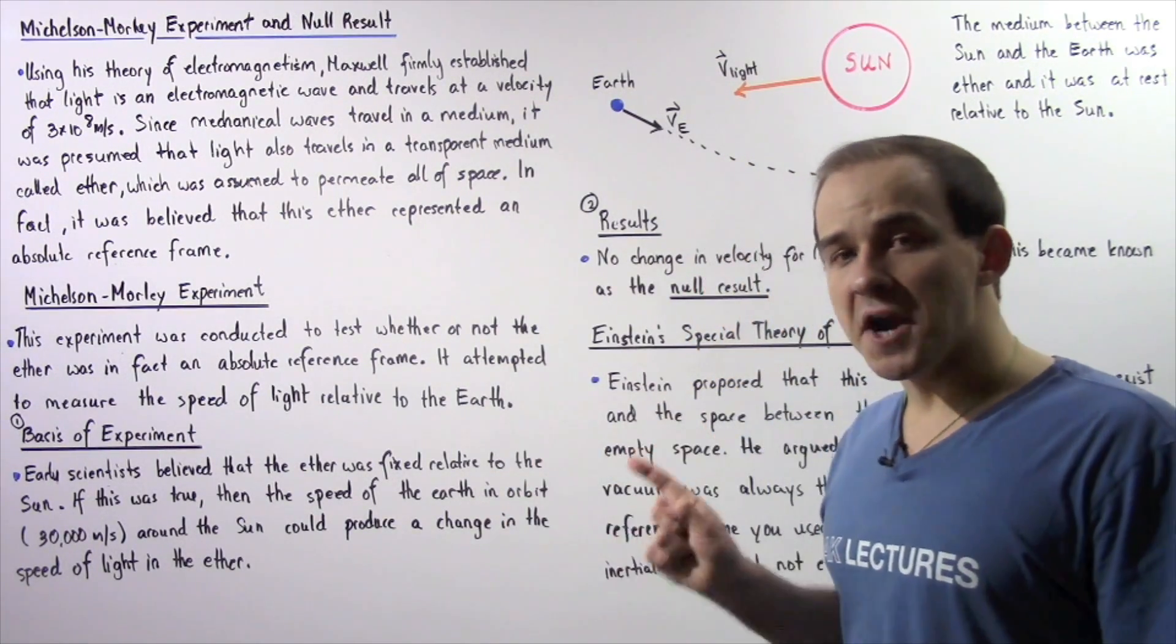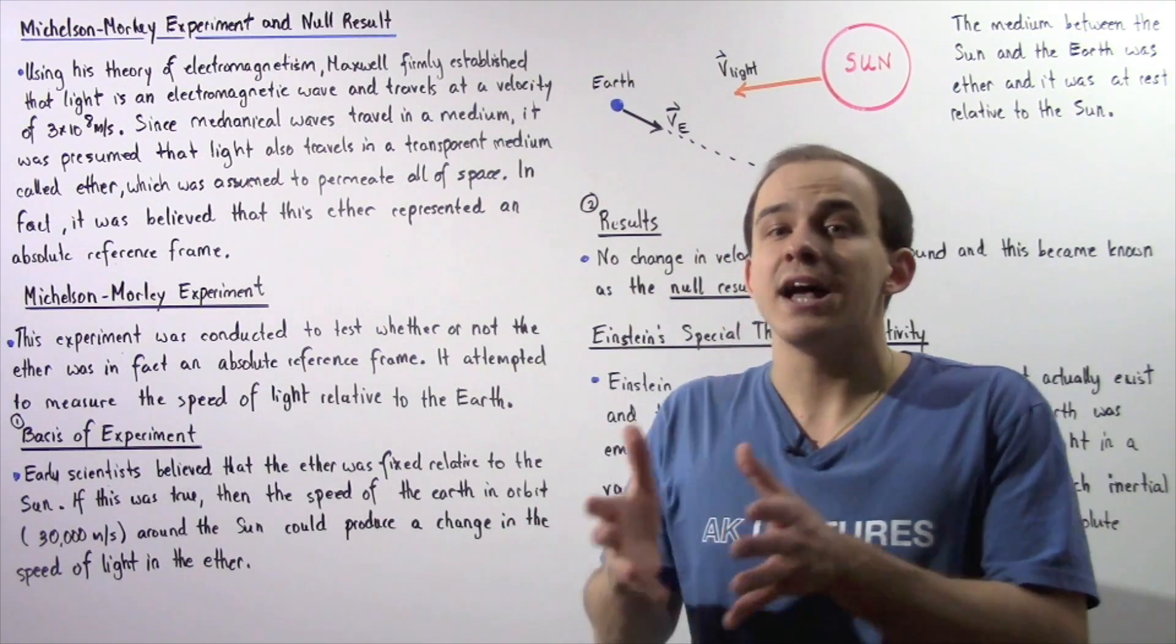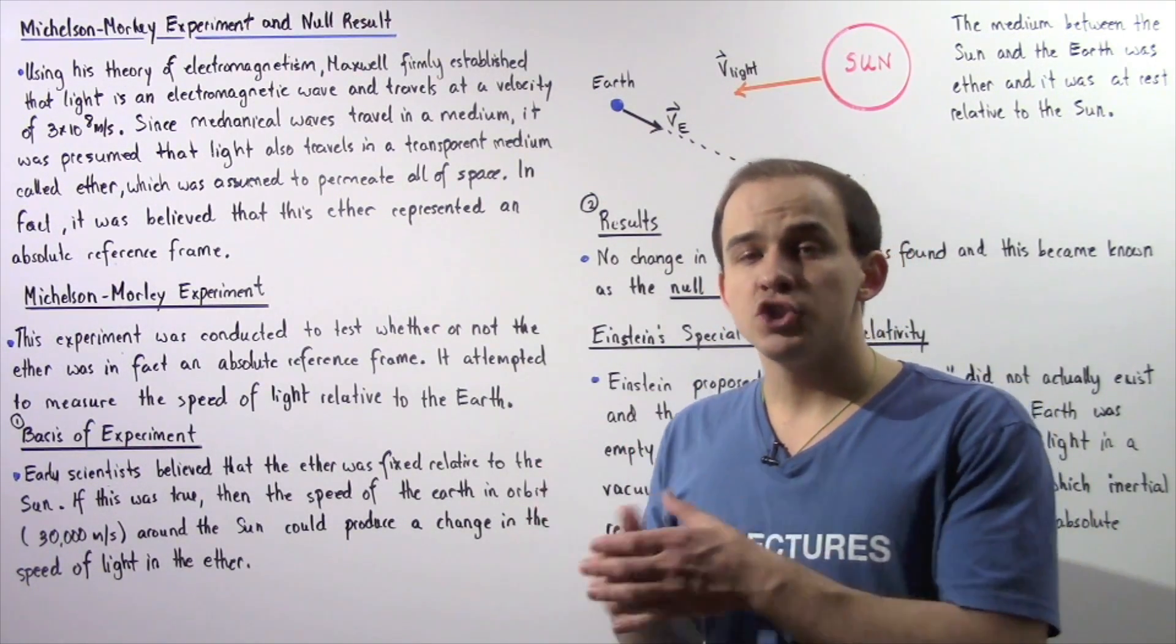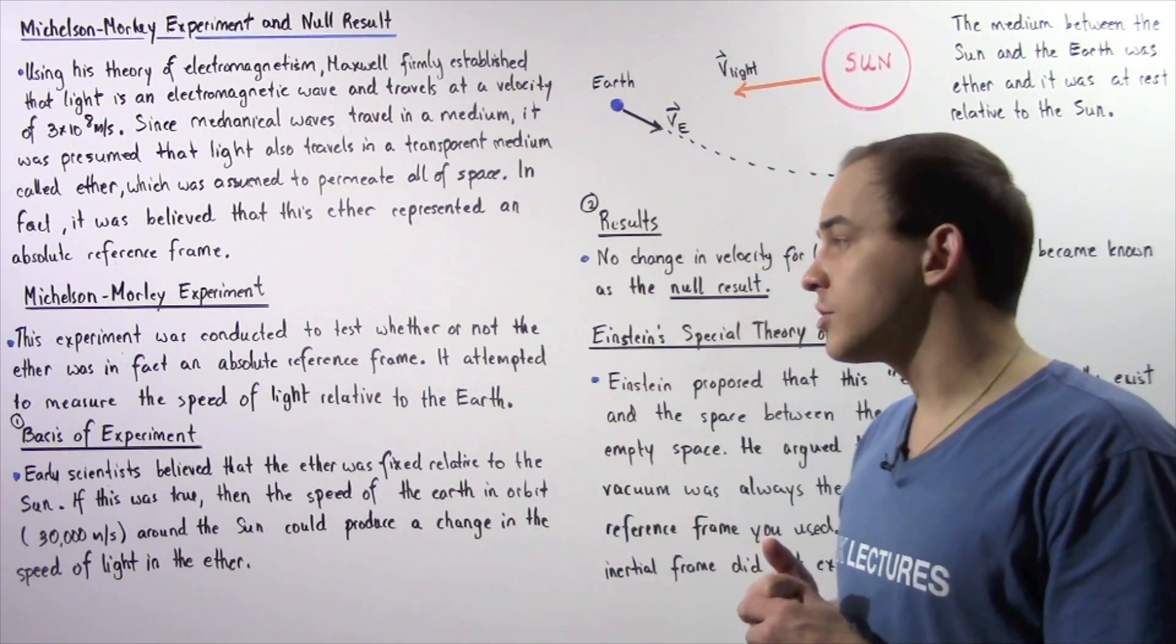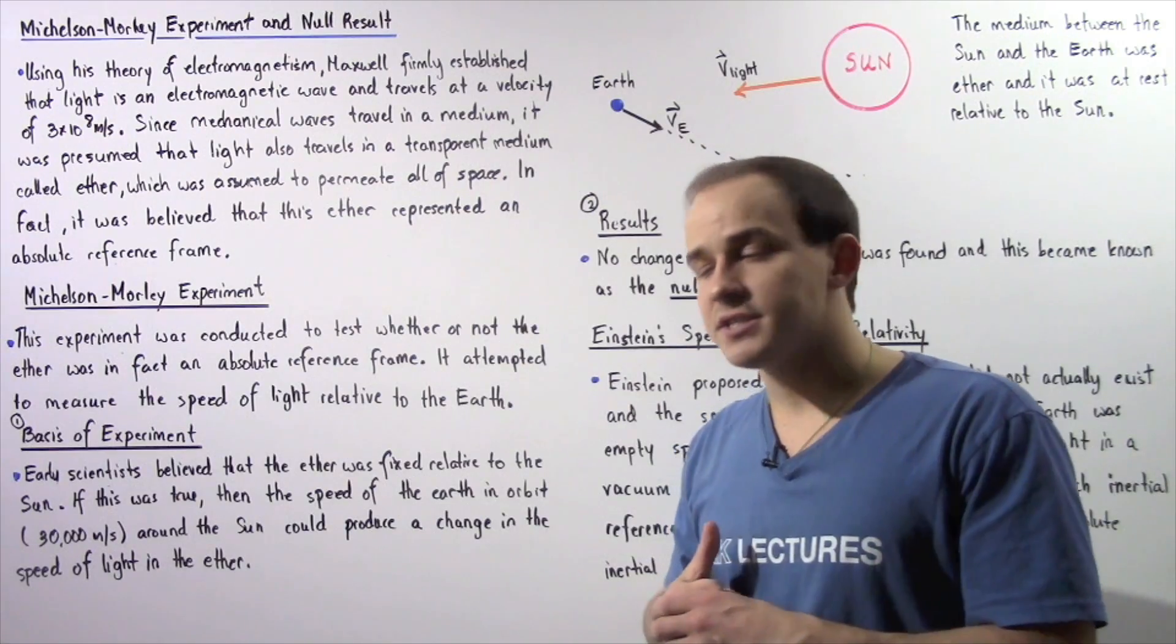This experiment attempted to test the speed, the velocity of light inside the ether relative to the velocity of the earth, relative to the motion of the earth around the sun.